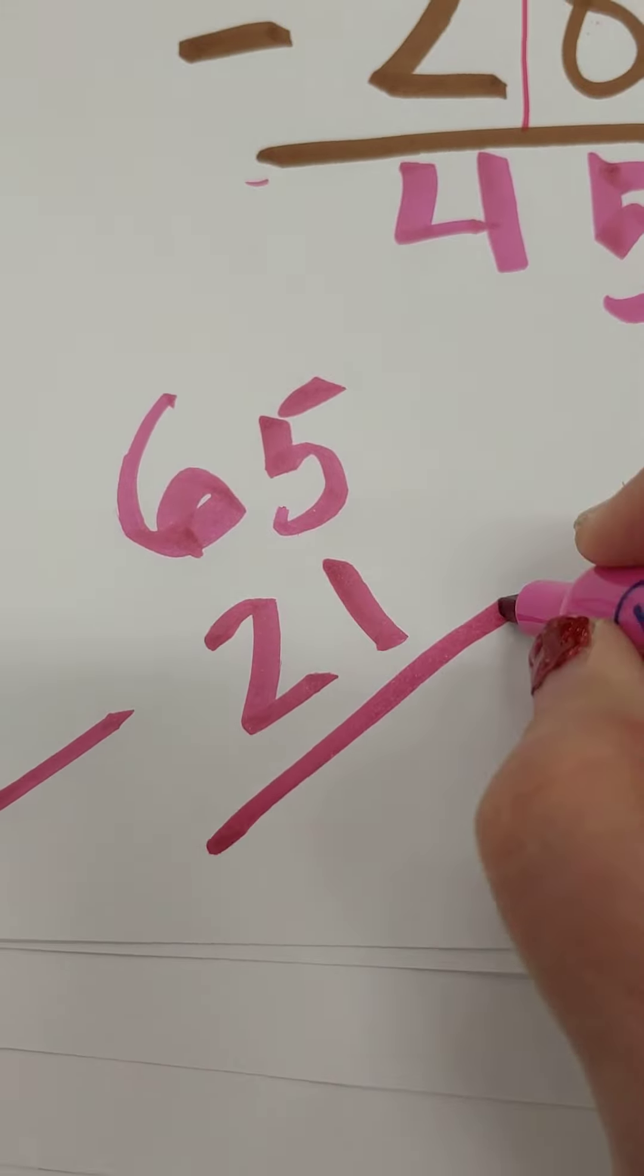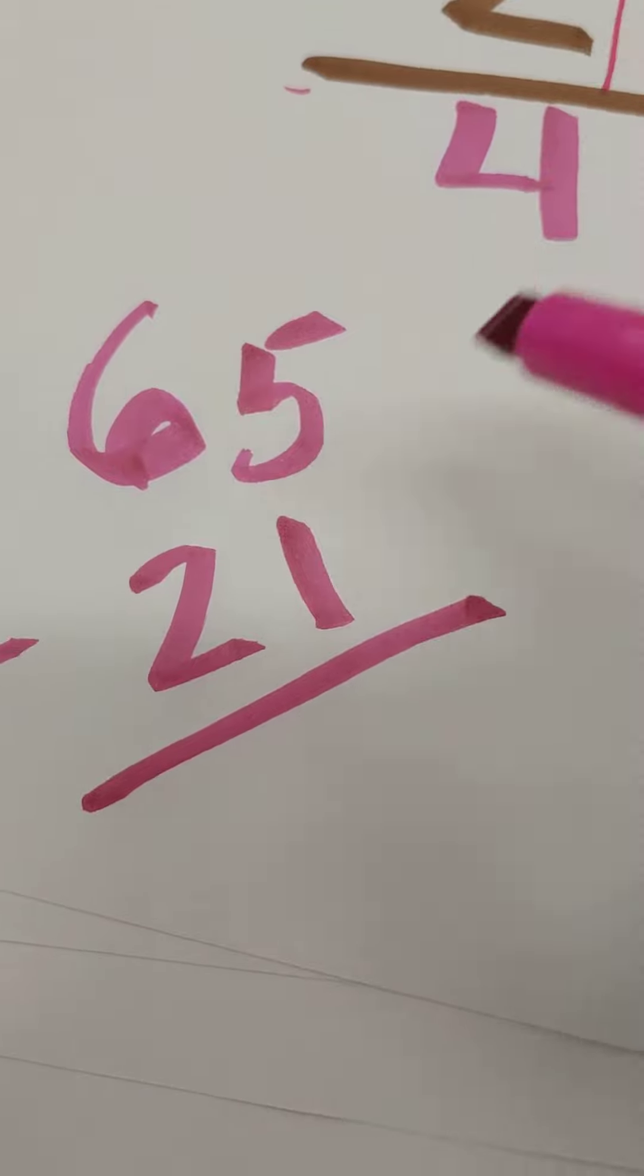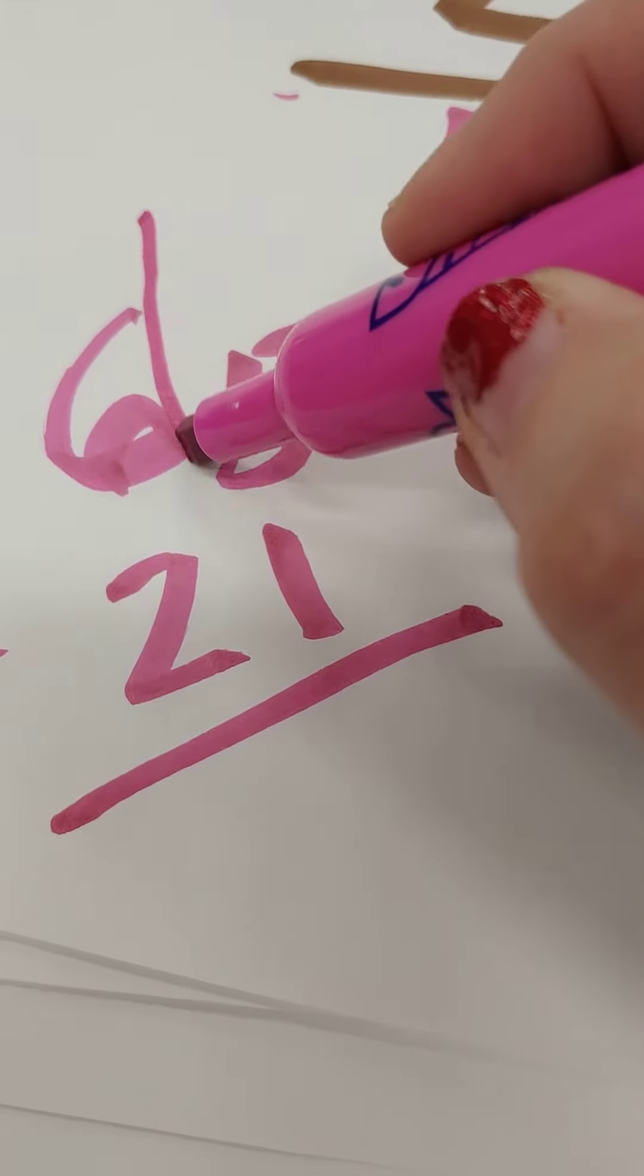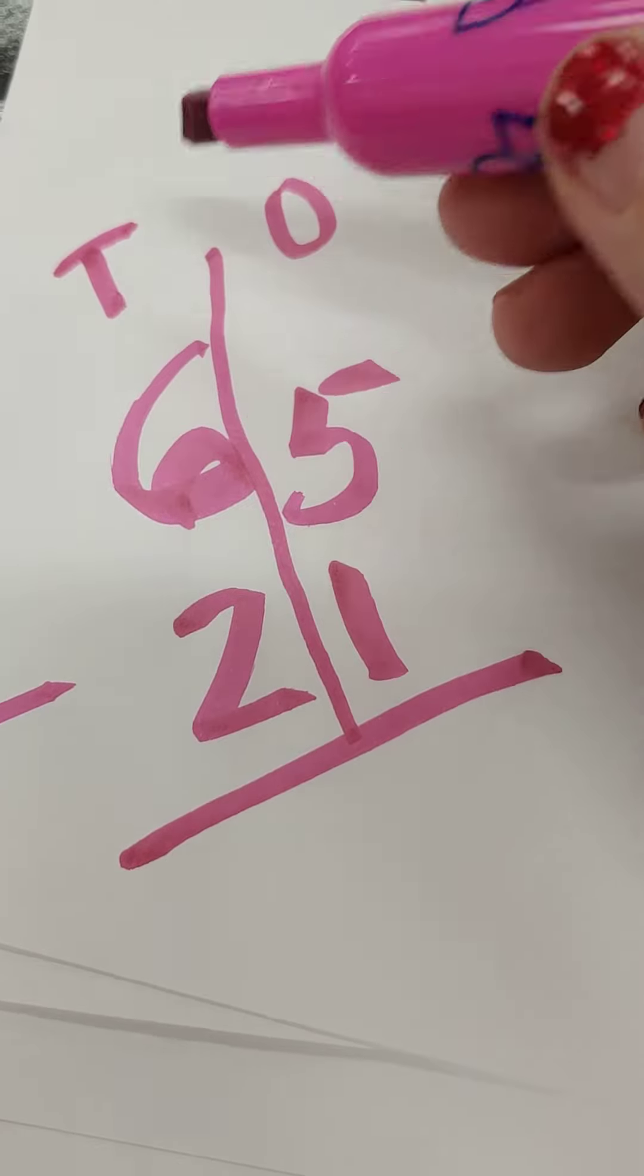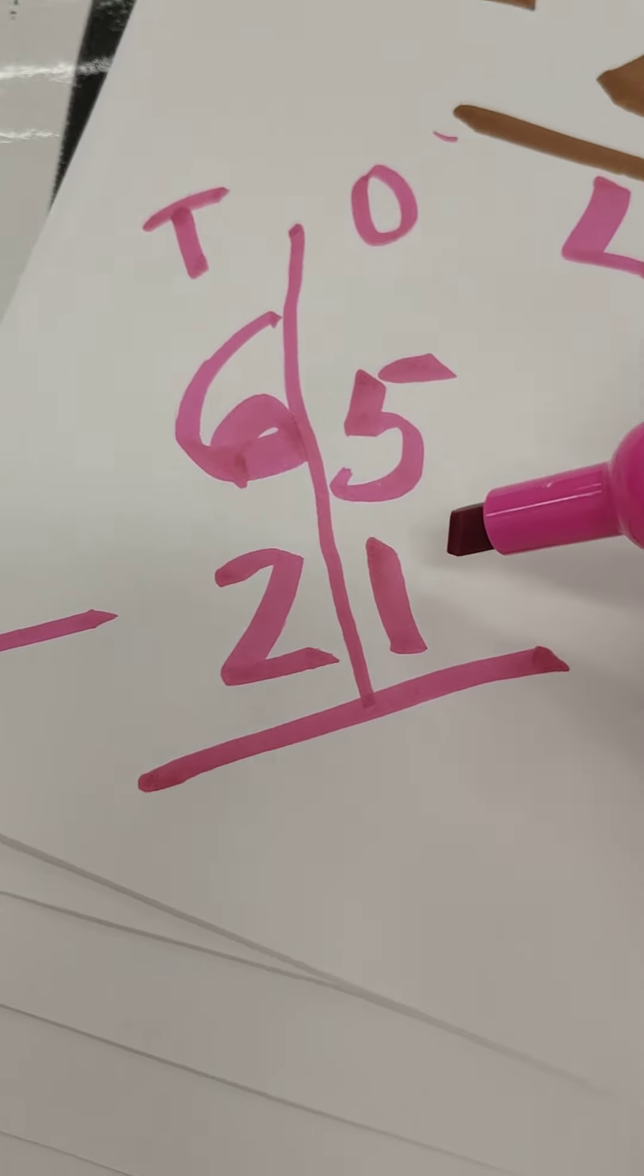Such as on this problem, 65 minus 21. Again, if you want to put your line, you may. These are the ones, these are the tens. Start with the ones when we do this trick.